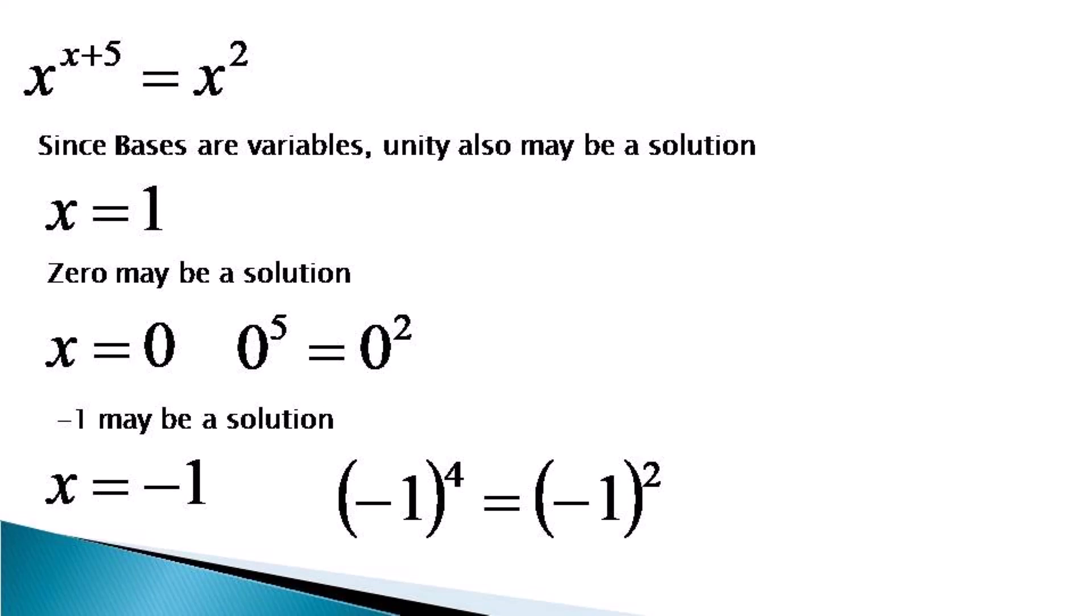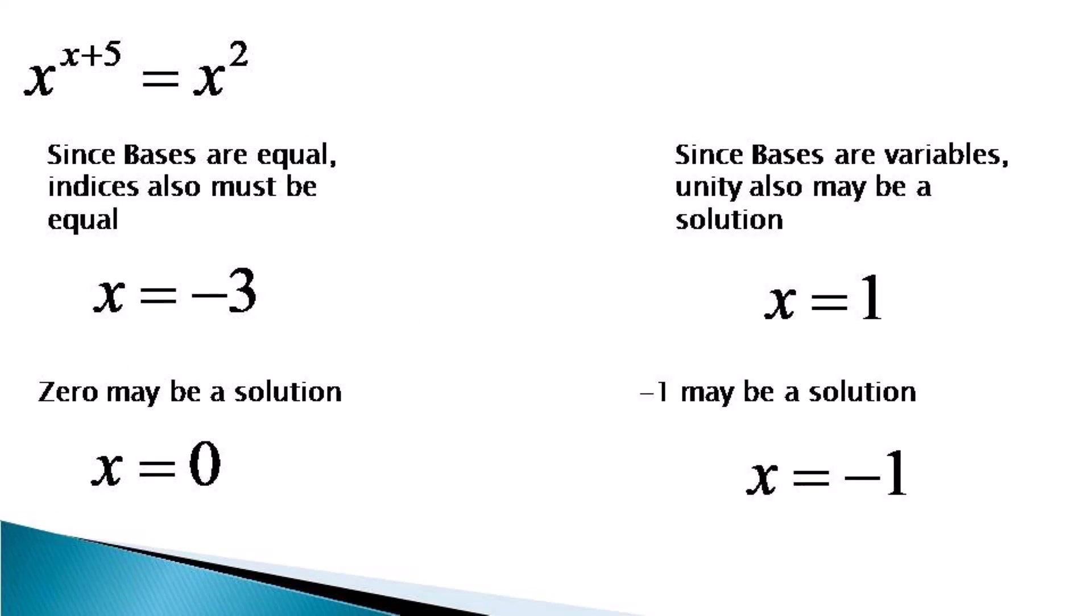Now this simple-looking equation has got 4 roots, or 4 values of x, which satisfy this equation. These are x equals minus 3, x equals 1, x equals 0, and x equals minus 1.